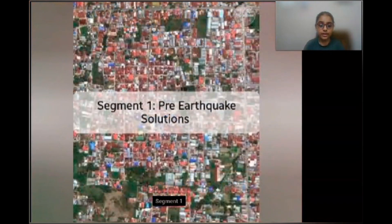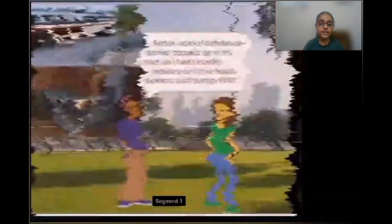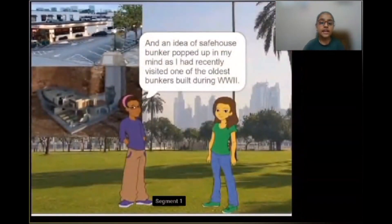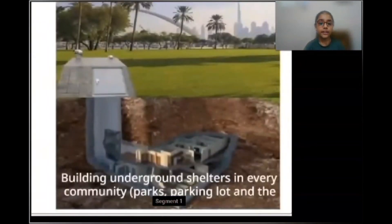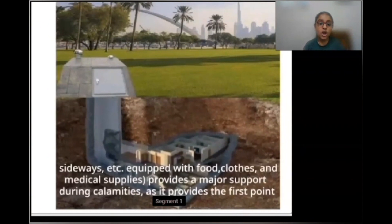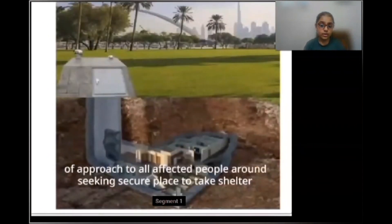Segment 1: Pre-Earthquake Solutions. This covers mandating underground safe shelters in all parks and parking lots in each community, and structures on all buildings which withhold seismic effects.